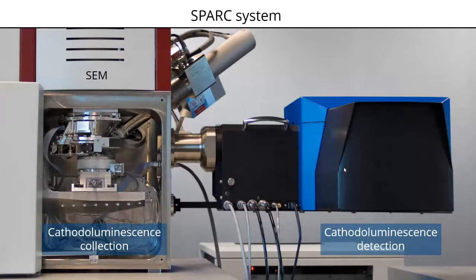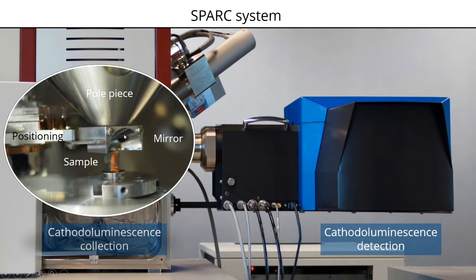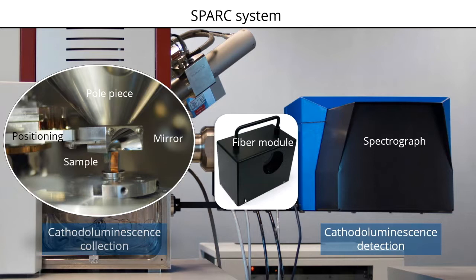Now let's move to some practical things — how do you actually do time-resolved cathodoluminescence imaging? You have an SEM, either pulsed or continuous. Inside, cathodoluminescence collection is done by a parabolic mirror connected to a motorized stage, which you can use to align the mirror or retract it. Outside there is optics in the detector unit, including a spectrograph for spectroscopy and angle-resolved imaging. In this optics compartment there's also a place for a fiber module, which allows you to couple light into a fiber and guide it toward an external detector for time-resolved imaging.